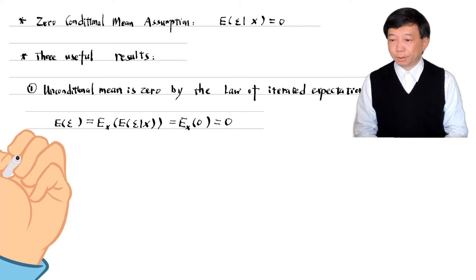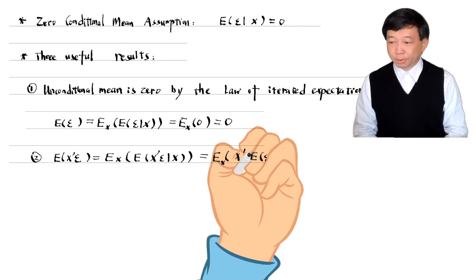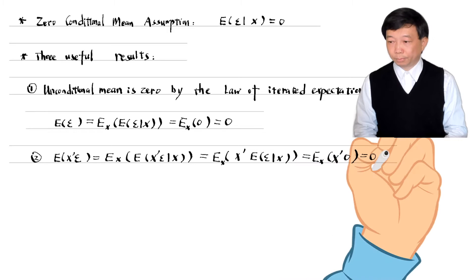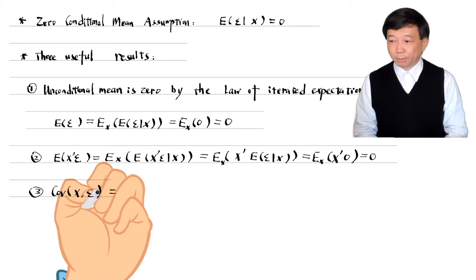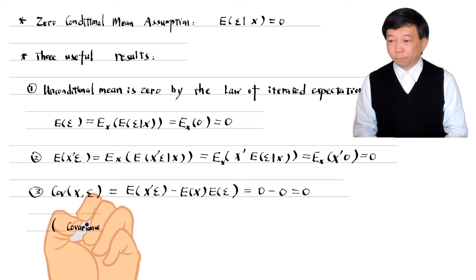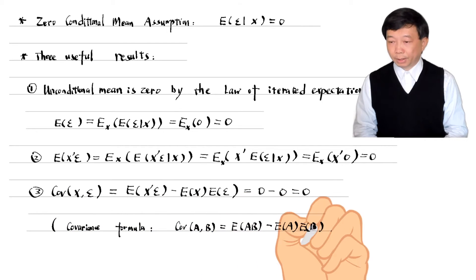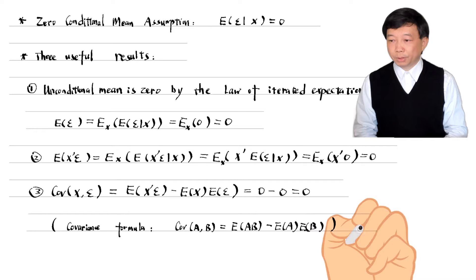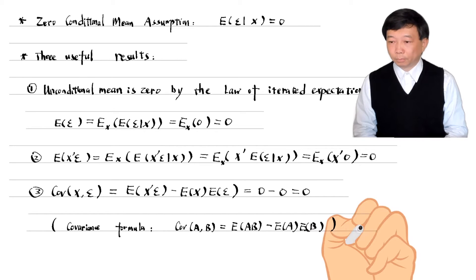Second, the expectation of x times epsilon is zero. Third, the covariance between x and epsilon is zero. Using the covariance formula, the covariance between x and epsilon equals the expectation of the product of x and epsilon minus the product of the two expectations. The covariance between x and epsilon is zero, which means they are not correlated.